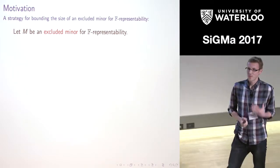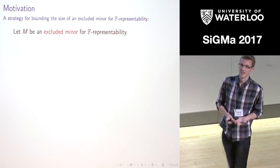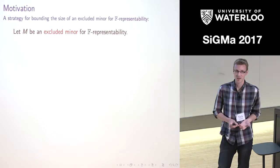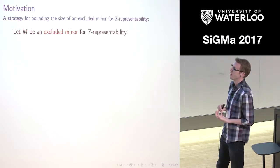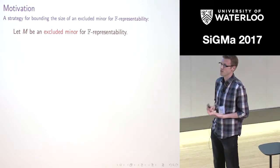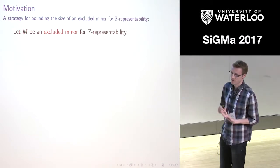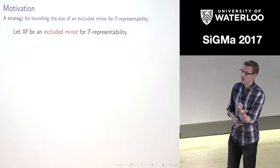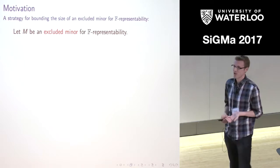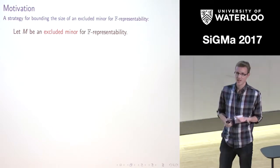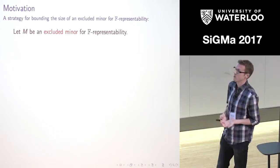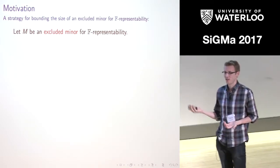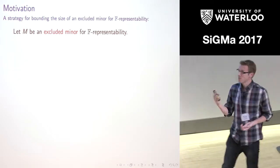Our primary motivation is in an attempt to come up with excluded minor characterizations for when matroids are representable over a finite field or a collection of finite fields. I'm going to talk about a general strategy for trying to bound the size of an excluded minor for F-representability, where F is your favourite finite field — but choose carefully.